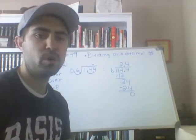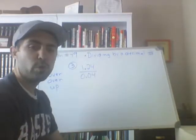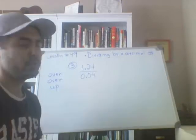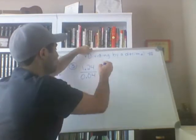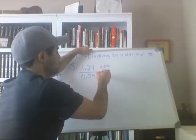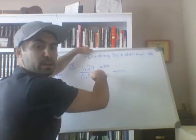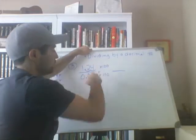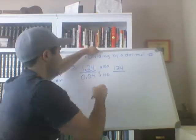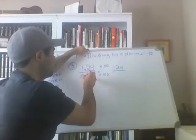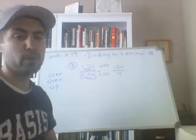Let's do a couple more, then I'll do some homework help. Here's another problem: we have 1 and 24 hundredths divided by 4 hundredths. So we're going to change that to an equivalent division problem by multiplying top and bottom by 100. If you multiply by 100, the decimal is going to move two places because whenever you multiply something by 100, the decimal moves two places to the right. So it's going to be 124. If you multiply the top by 100, you've got to multiply the bottom by 100 — you're going to move it two places over, and that's going to be 4. So 124 divided by 4.